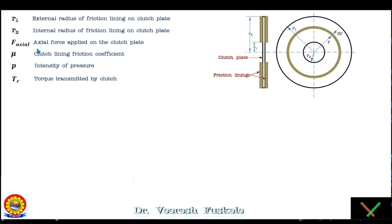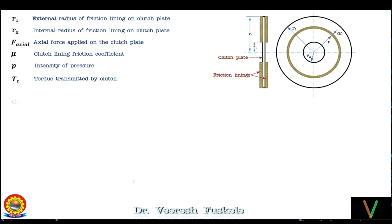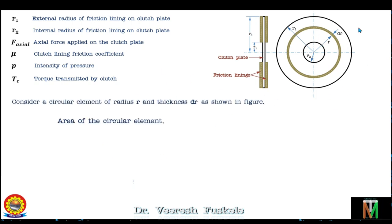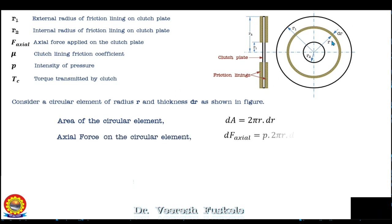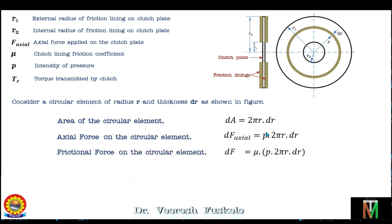For the circular ring of radius r and thickness dr, the area of this circular element is 2πr·dr. The axial force on this element is pressure times area, so dF = p·2πr·dr. The frictional force on the circular element is axial force times coefficient of friction, so df = μ·p·2πr·dr.